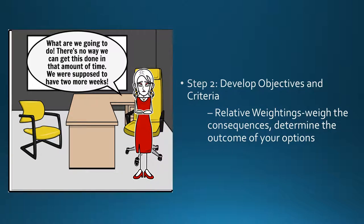Step 2: Develop objectives and criteria. Relative weightings. Weigh the consequences. Determine the outcome of your options. What are we going to do? There's no way we can get this done on time. We were supposed to have 2 additional weeks.